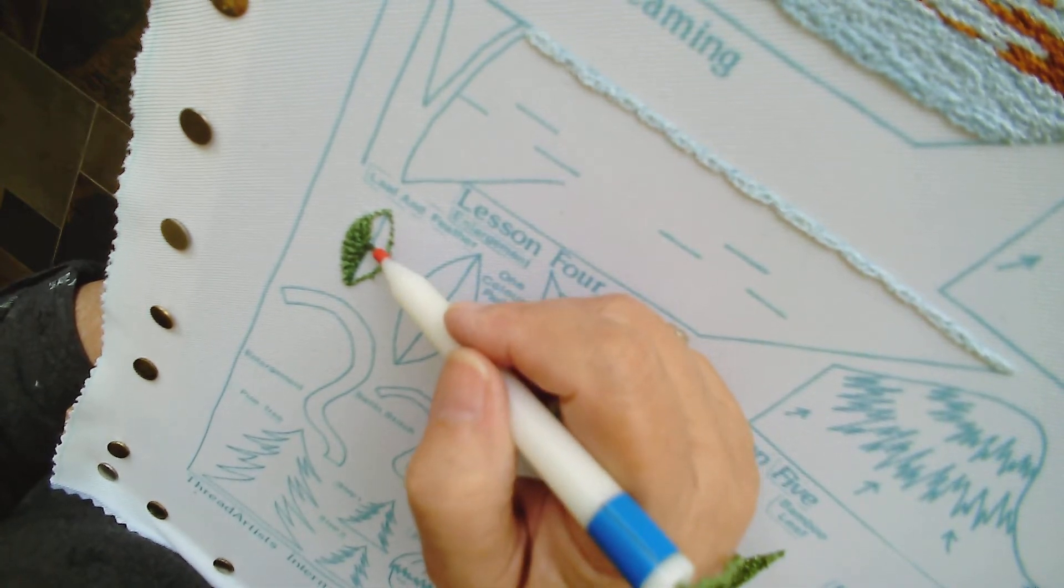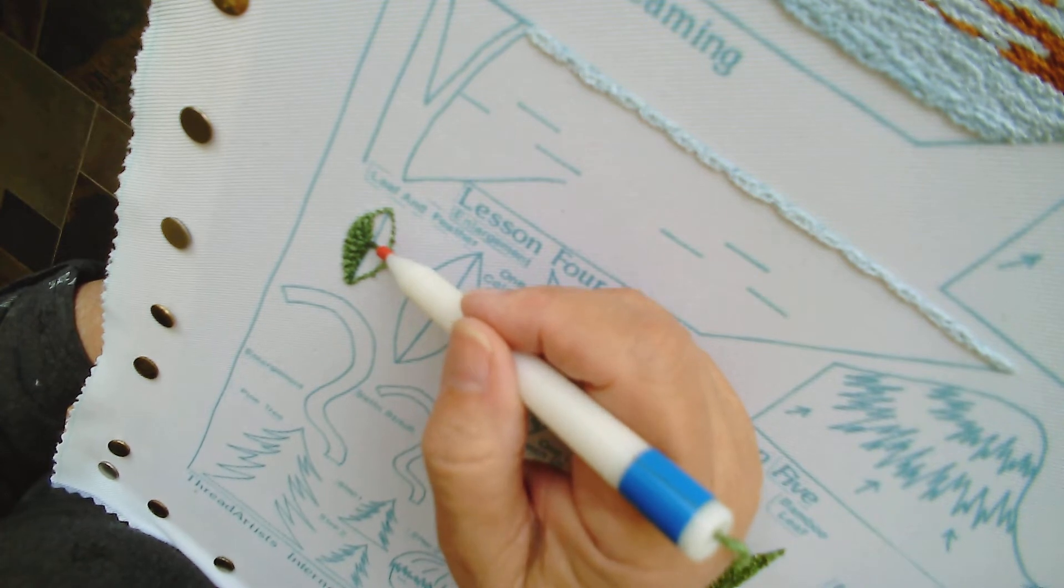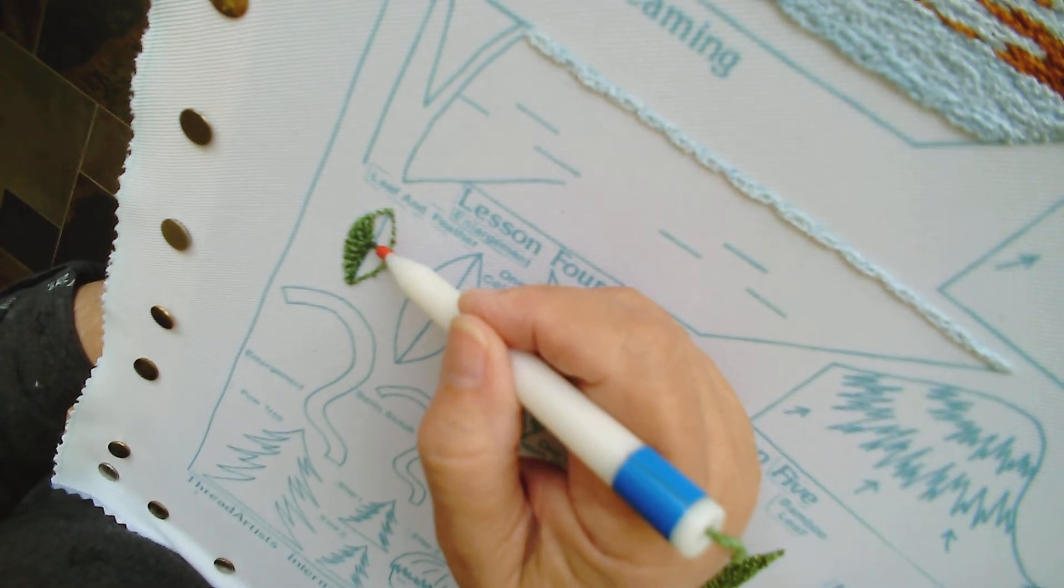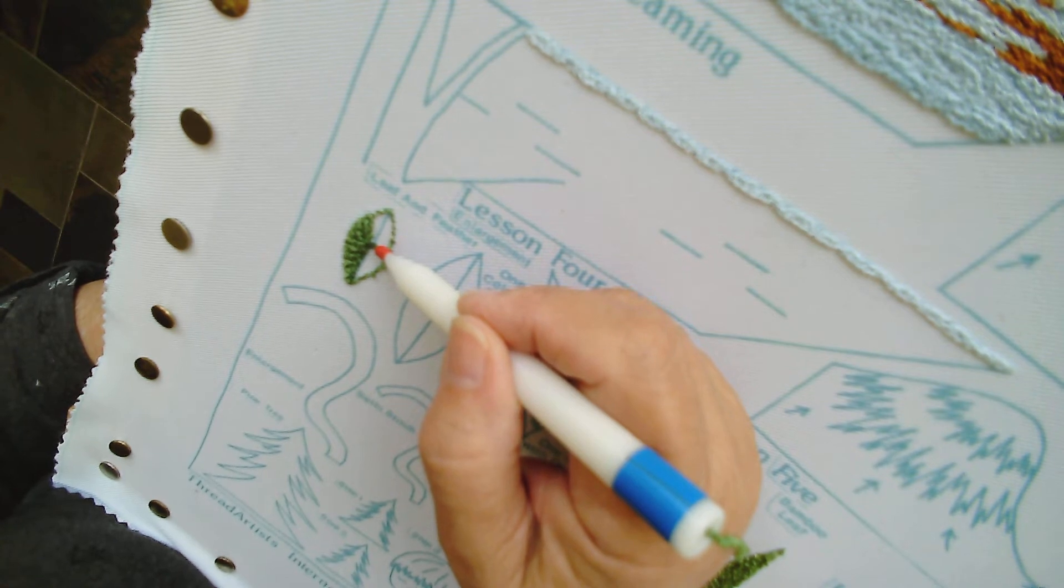So first you do line padding all the way around the leaf, and then you start at the bottom and work your way up, stitching on an angle.